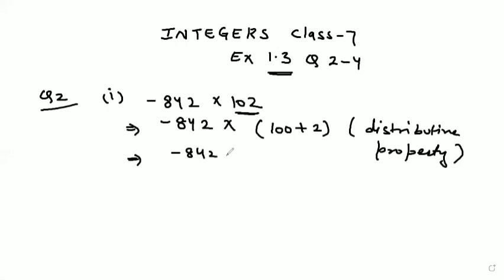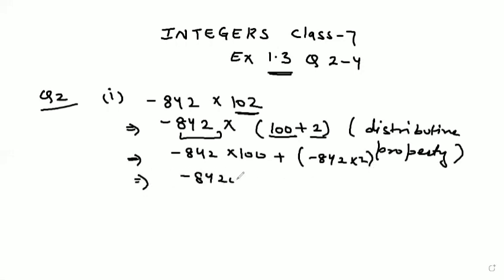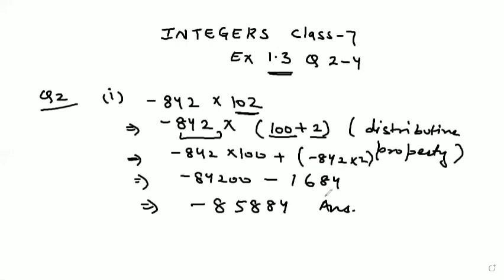So minus 842 into 100 will get multiplied first, and then minus 842 into 2. That gives minus 84,200 plus minus 1,684. So minus 84,200 minus 1,684 equals minus 85,884. This is our answer for the first part of question number 2.